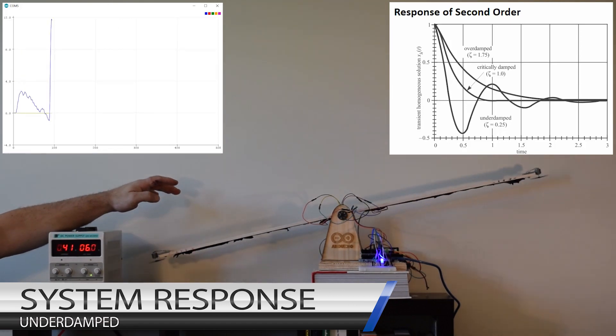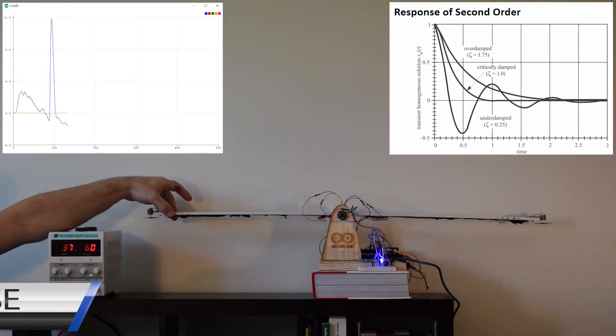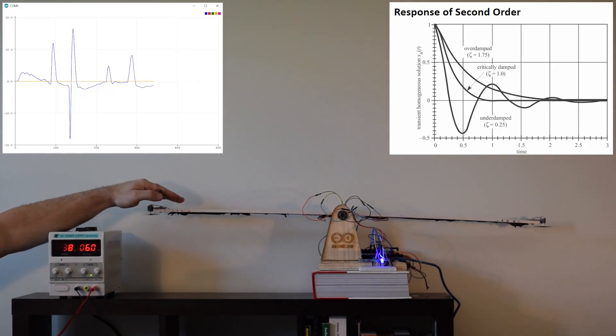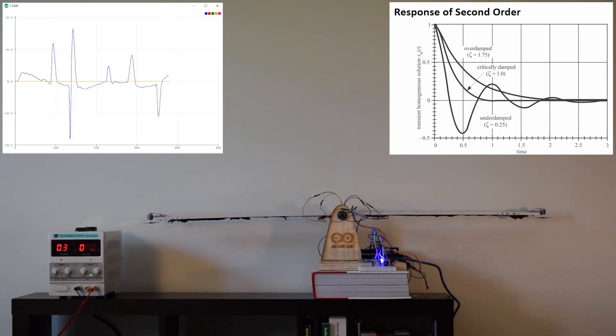My target when tuning was to achieve a slightly underdamped system response because the testing would need to occur over a relatively short period of time. The response I achieved is shown on the graph. The orange line is the set point and the blue line is the angle from the gyro.